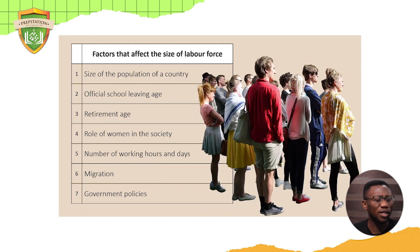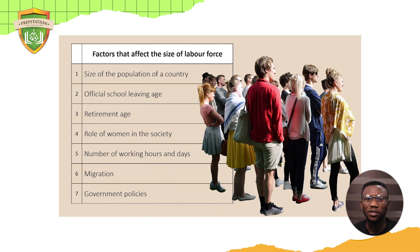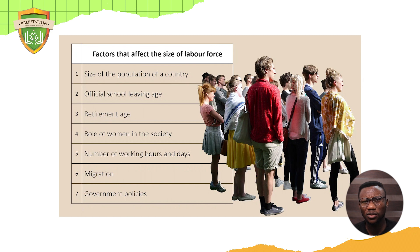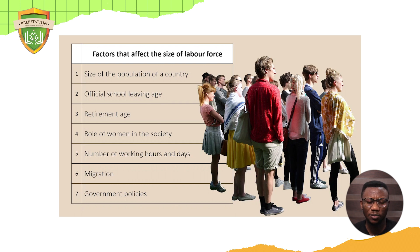Another factor is population. The bigger the population, the bigger the labor force. The smaller the population, the smaller the labor force. If you have 100 million people in a country, the labor force will be big. But if you have 300,000 like the Vatican City, you definitely have a smaller proportion of people that are willing and able to work.